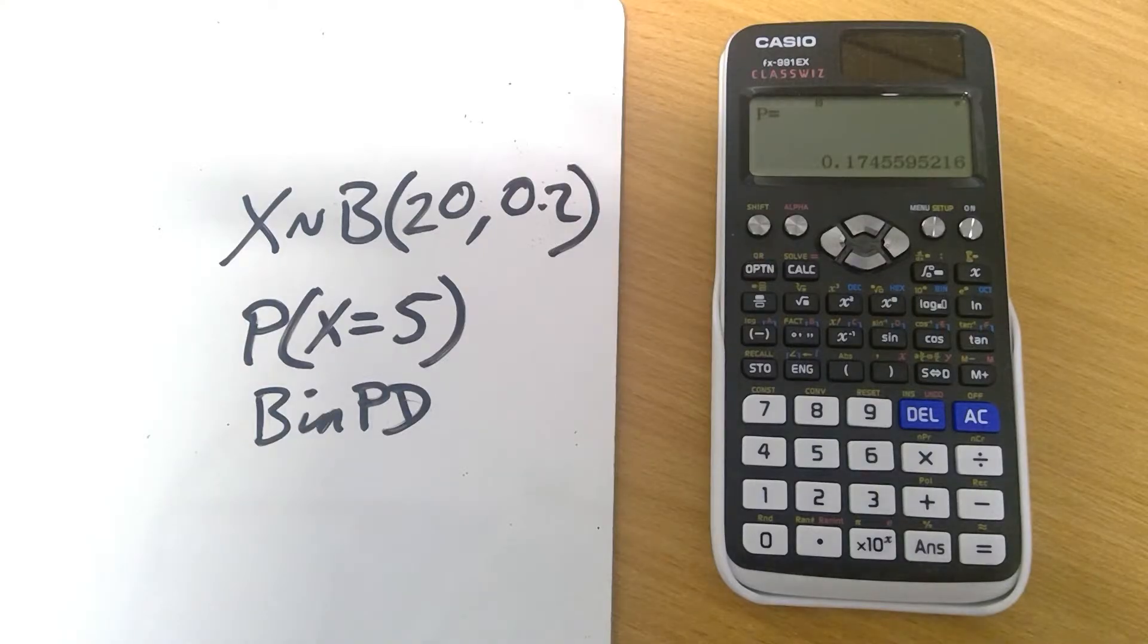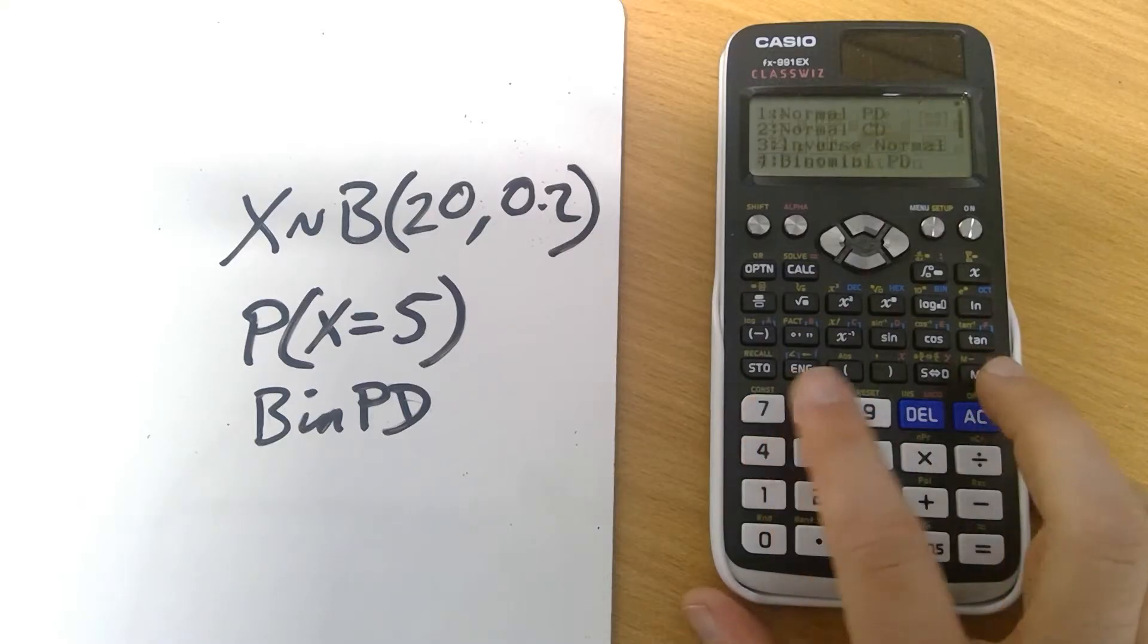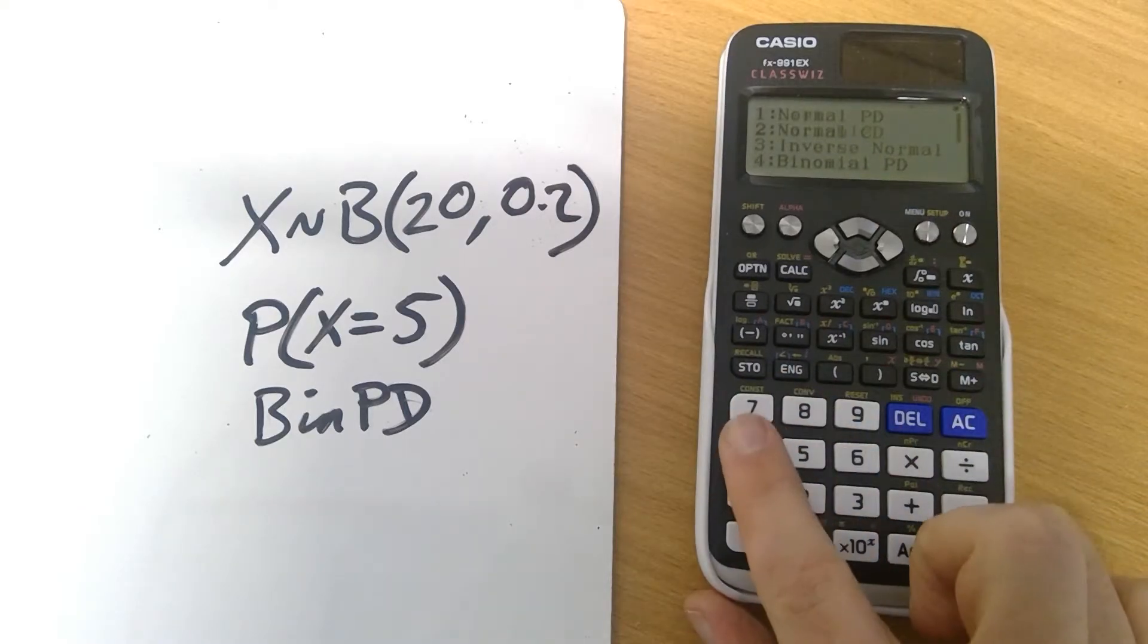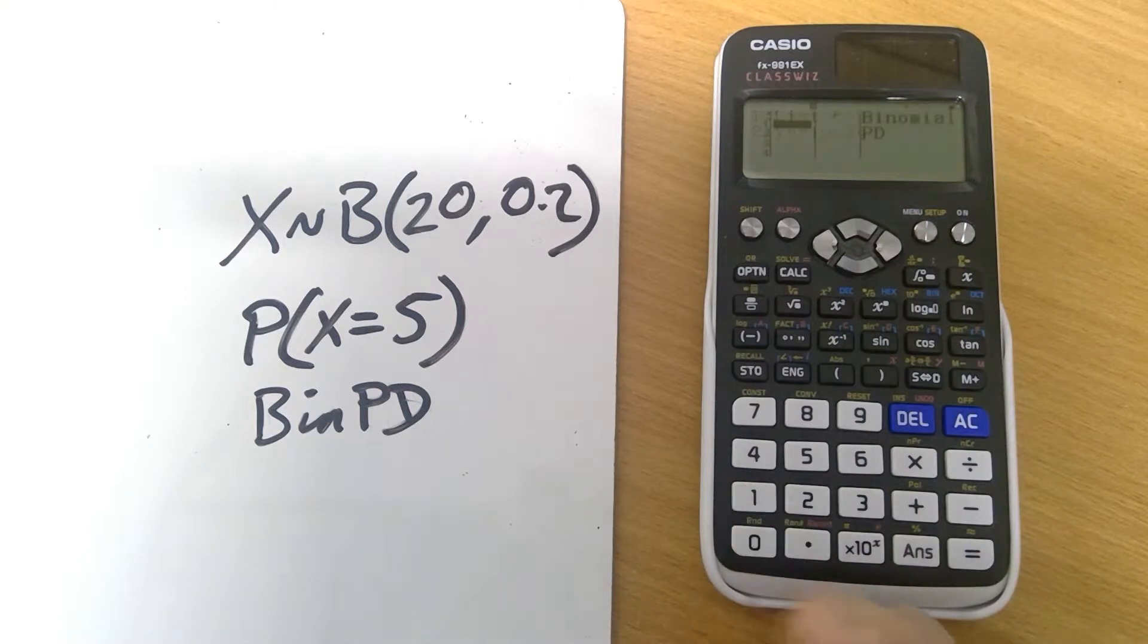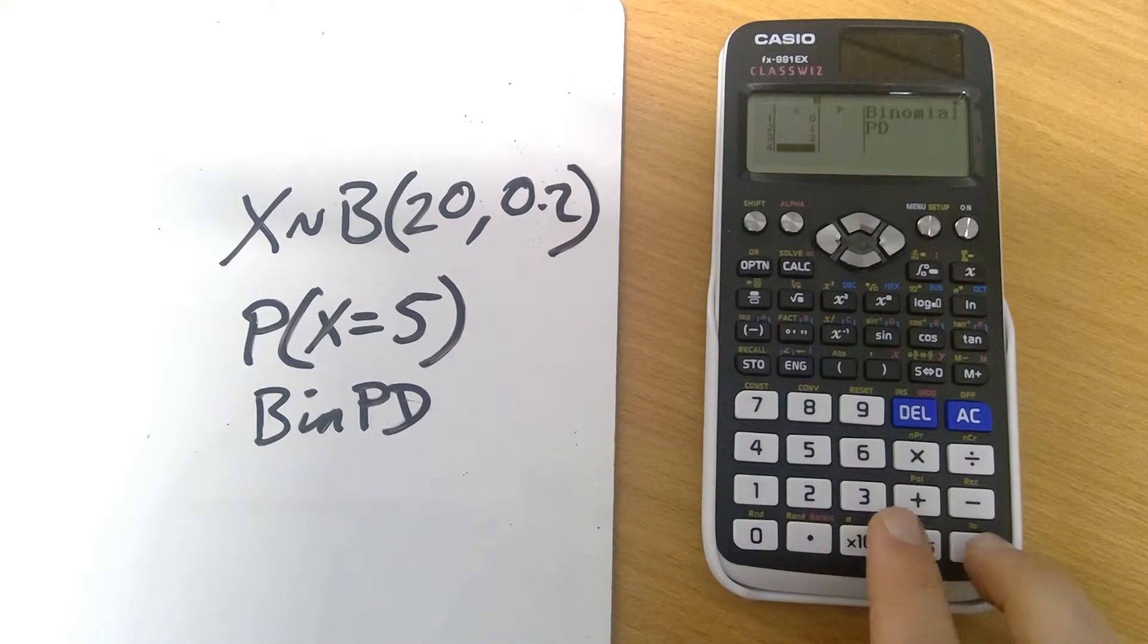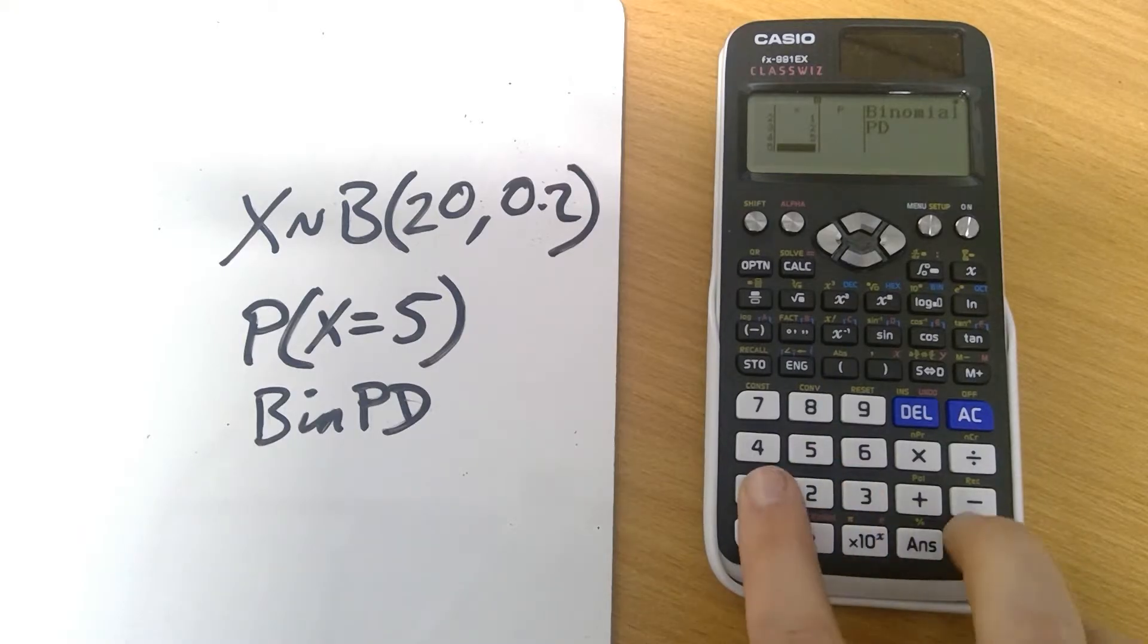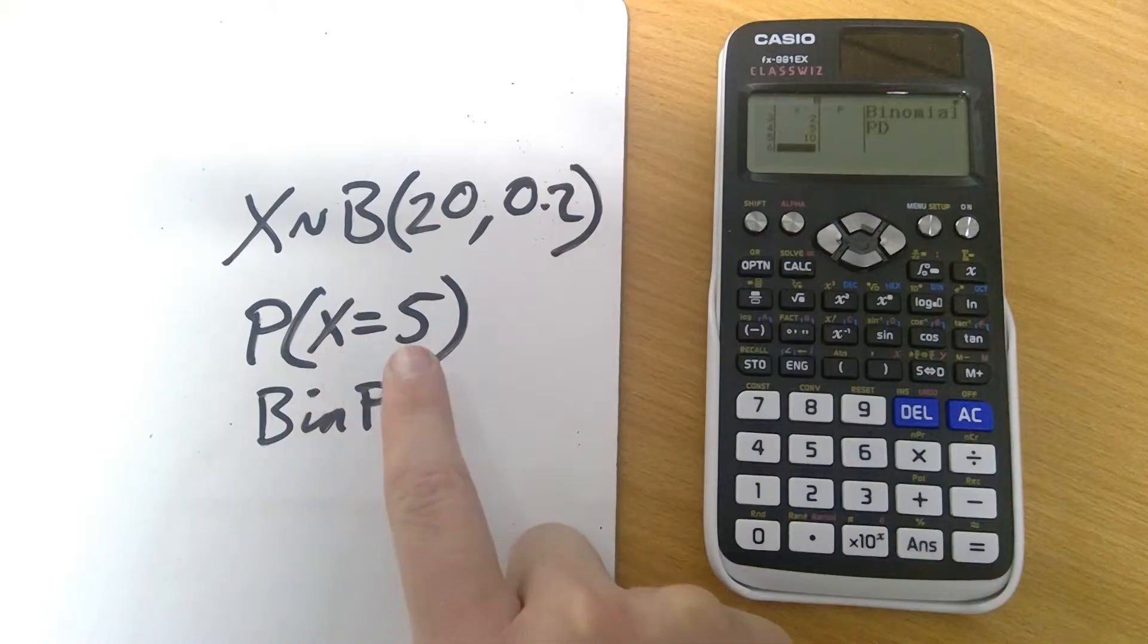However, what we can also do, if we go back in there, unfortunately we have to go back in menu 7 and then back into binomial probability distribution. If we do list instead, here we can get it to work out a variety of values. So maybe I want the probability of 0, of 1, of 2, maybe then 5, and 10 for some reason. This is just changing this value here.